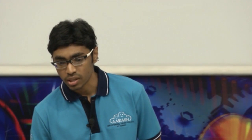In short, property animation is a generic method of animation in Android. As Pushpak has explained about view animation, which can only be applied on views such as buttons or text views, the method I am going to discuss can be applied on any object. Here I will briefly give a short comparison of both view animation and property animation.